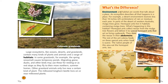Environment and habitat are words that talk about a place. An ecosystem describes all that happens in a place — it is not just the place, but everything that lives there and happens there too. For example, a desert environment receives less than 10 inches or 25 centimeters of rain each year. In parts of the desert of Western Australia, mulga trees grow. Honeypot ants live in habitats containing mulga trees. They collect nectar from the mulga tree flowers and deliver it to special honeypot ants that act as living cupboards, storing the nectar in their abdomens. The rest of the ant colony feeds on these special ants when food is scarce, and the native people of this area eat the honeypot ants too. The plants and ants living together in that area is what makes it an ecosystem.